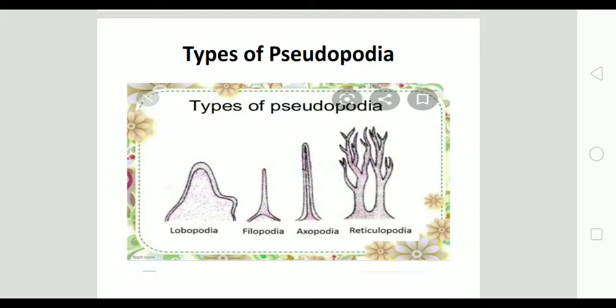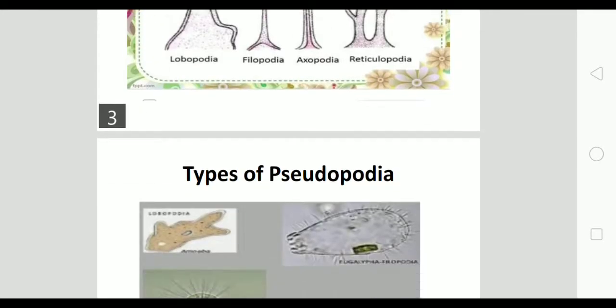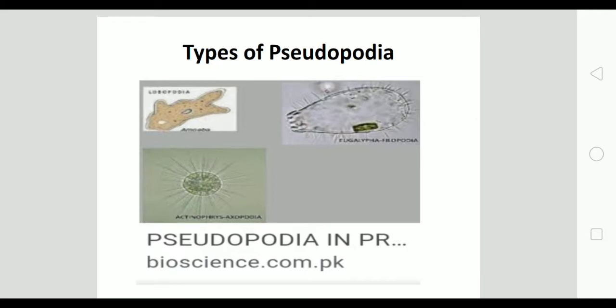In this diagram you can observe the types of pseudopodia. First, lobopodia is a lobe-like outgrowth of the body — lobular in shape. Filopodia is triangular, broad at the base and tapering at the end. Axopodia is long and hair-like. Reticulopodia is also hair-like but has a branching nature. You can observe that amoeba has lobular pseudopodia, while photographs show other protozoan animals with filamentous, hair-like, or lobe-like pseudopodia.